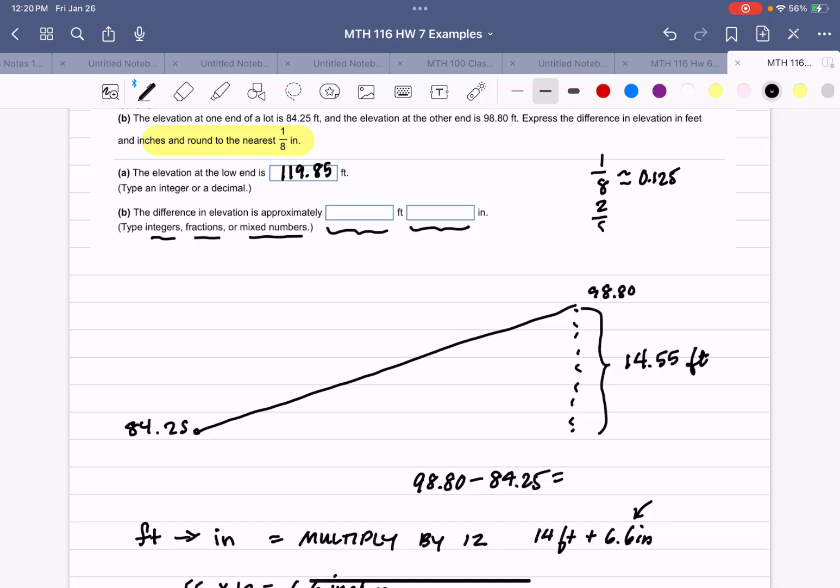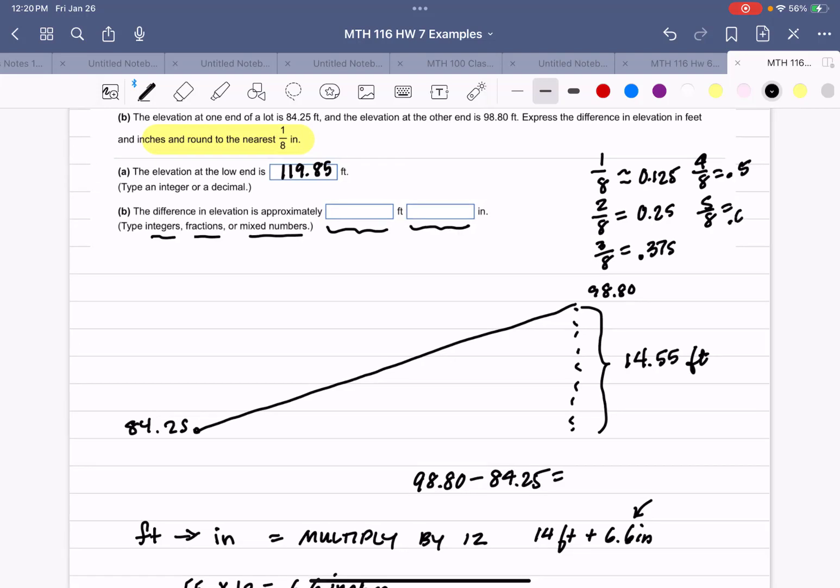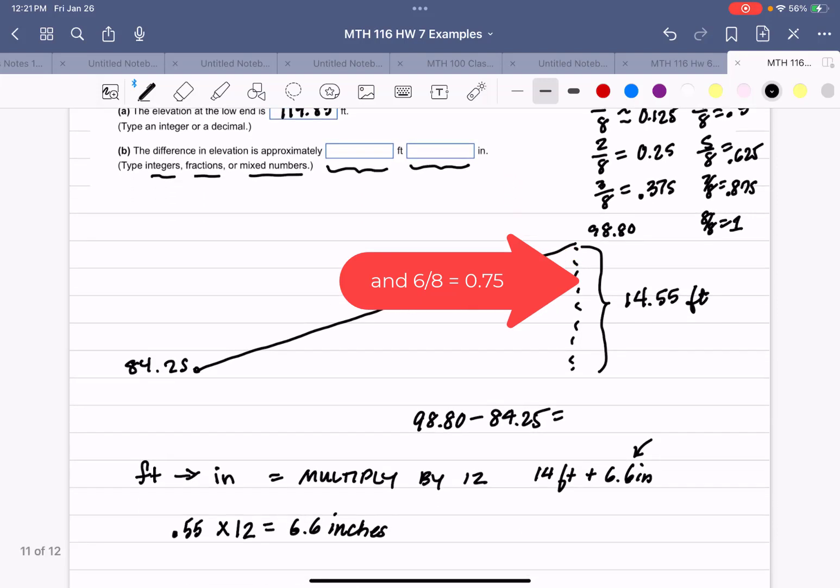Two divided by eight is 0.25. Three divided by eight is 0.375. Four divided by eight is 0.5. Five divided by eight is 0.625. Seven divided by eight is 0.875. And of course, eight divided by eight would be a whole inch.